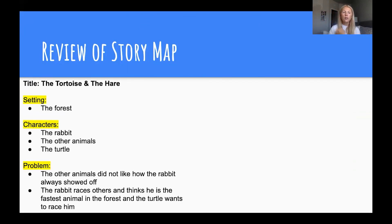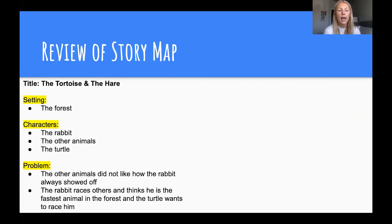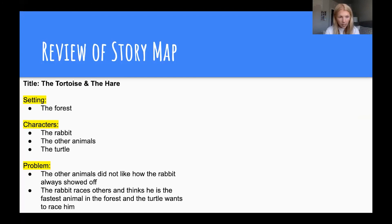For our title we should have 'The Tortoise and the Hare.' The setting, which was stated at the beginning of the video, was the forest. Our characters in the plot were the rabbit, the other animals, and the turtle. Be sure to write these into your story map. For the problem: the other animals did not like how the rabbit always showed off, and the rabbit races others and thinks he is the fastest animal in the forest.